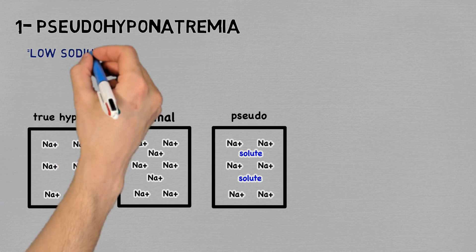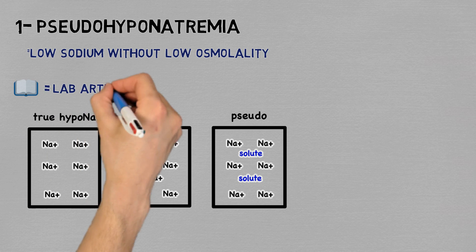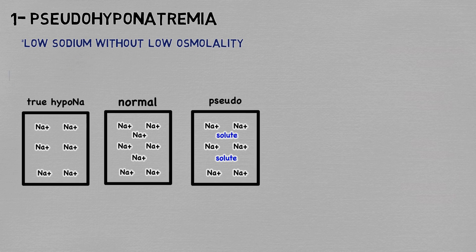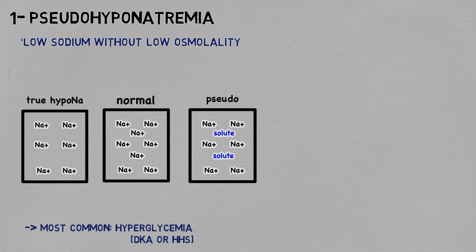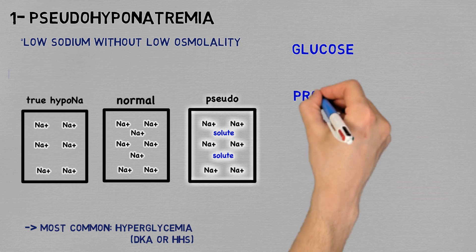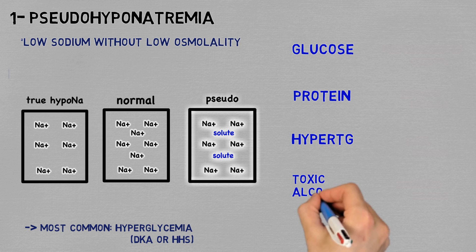I am defining pseudo-hyponatremia here as low sodium with a discordant osmolality — that is, either normal or high. Textbooks only call it pseudo-hyponatremia when it's an artifact of the lab technique, but honestly I don't see a meaningful clinical relevance to that, and all it does is make the subject more complex. The classical picture here is hyperglycemia and diabetic ketoacidosis. The osmolality is actually usually high because at very high levels glucose acts as an osmotically active solute, causing the sensors in the body to try to lower the sodium to compensate. Other causes include high protein levels in multiple myeloma, super-high triglycerides, and toxic alcohol intoxications such as methanol.